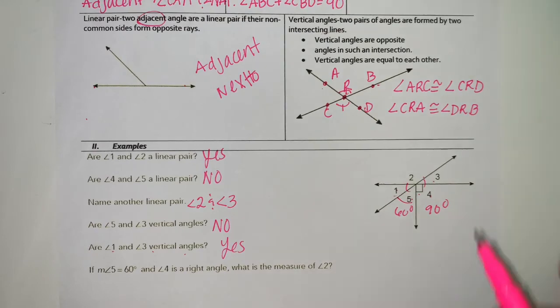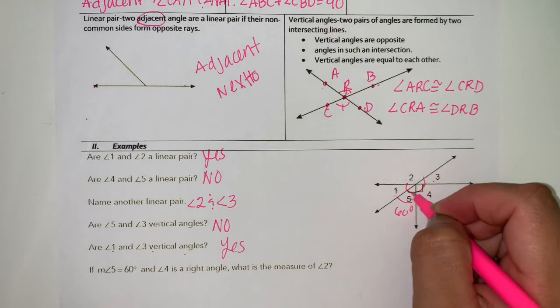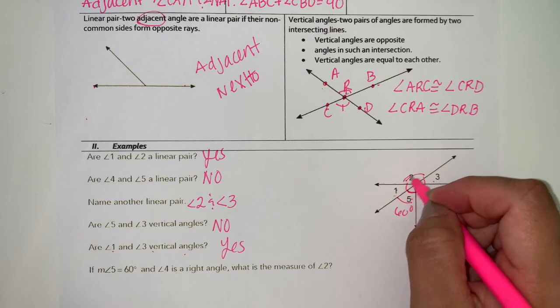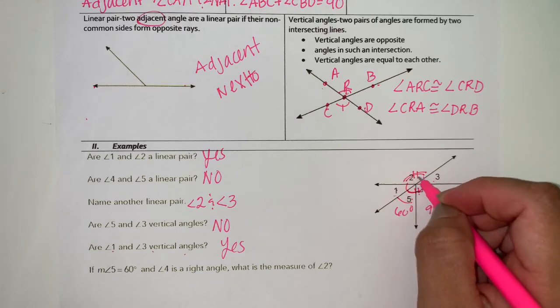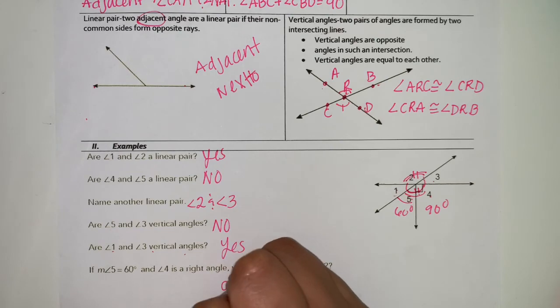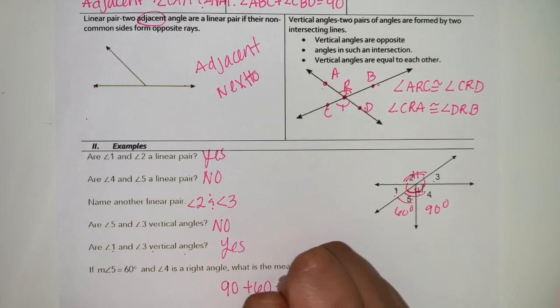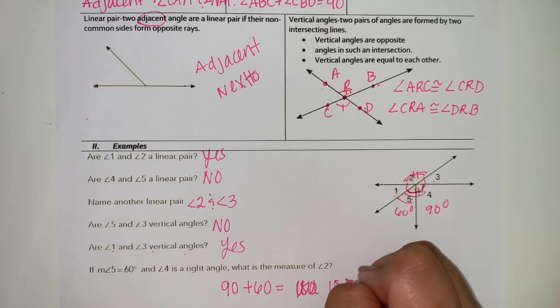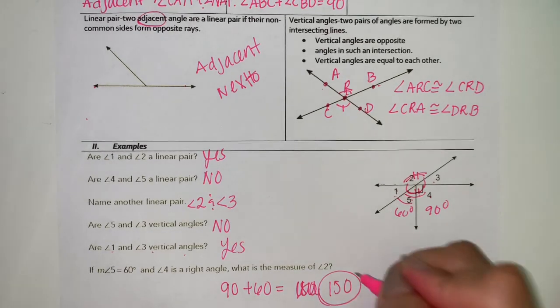What is the measure of angle two? That would be the same because they are vertical angles. So that would be 90 plus 60 equals 160. That would be the measurement.